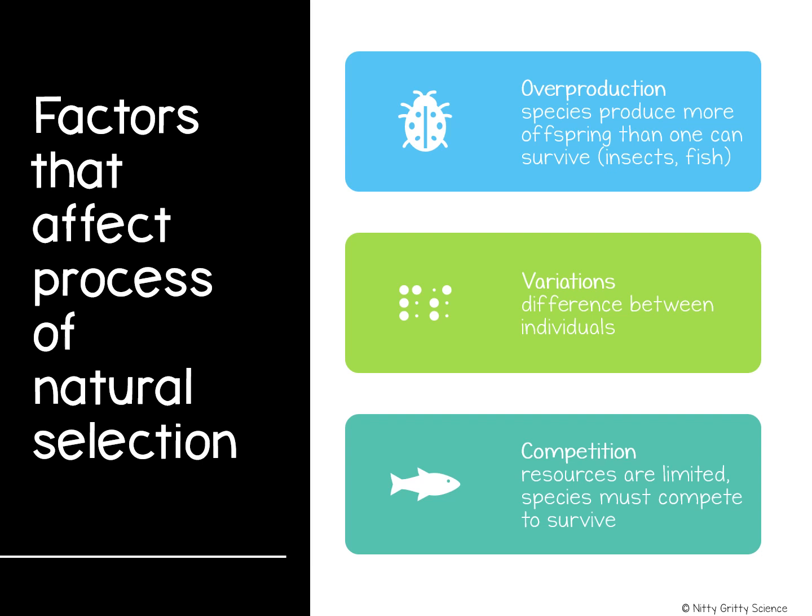Darwin identified factors that affect natural selection: overproduction, competition, and variations. Darwin knew that most species produce far more offspring than can possibly survive. In many species, such as insects, so many offspring are produced that there are not enough resources like food, water, and living space for all of them — if all the thousands of eggs of a female insect hatched, the earth would be overrun by insects. Since resources are limited, members of the species compete with each other to survive. Competition is usually indirect: many insects that hatch will not find enough food to survive, and predators will consume insect eggs as a food source.